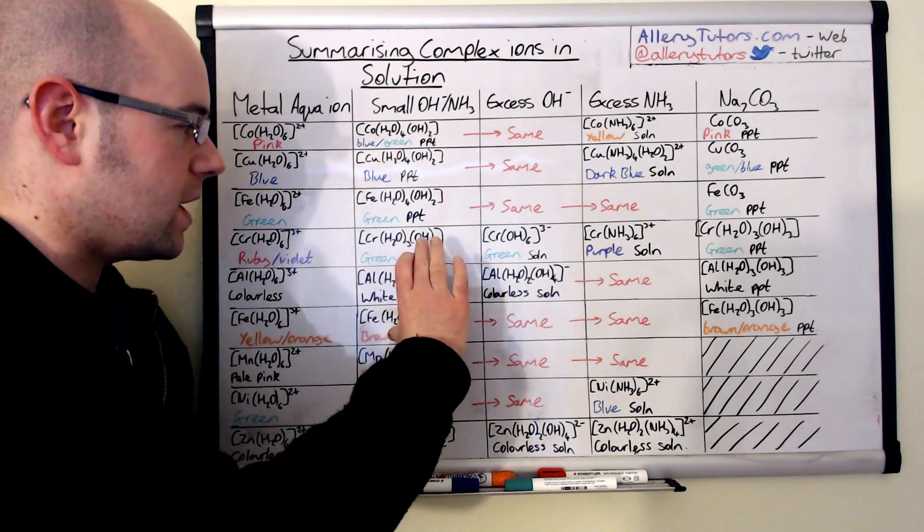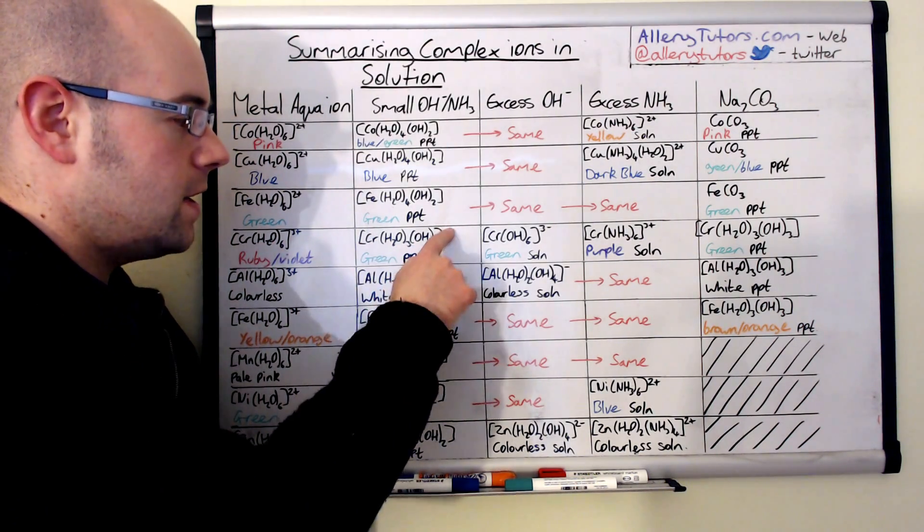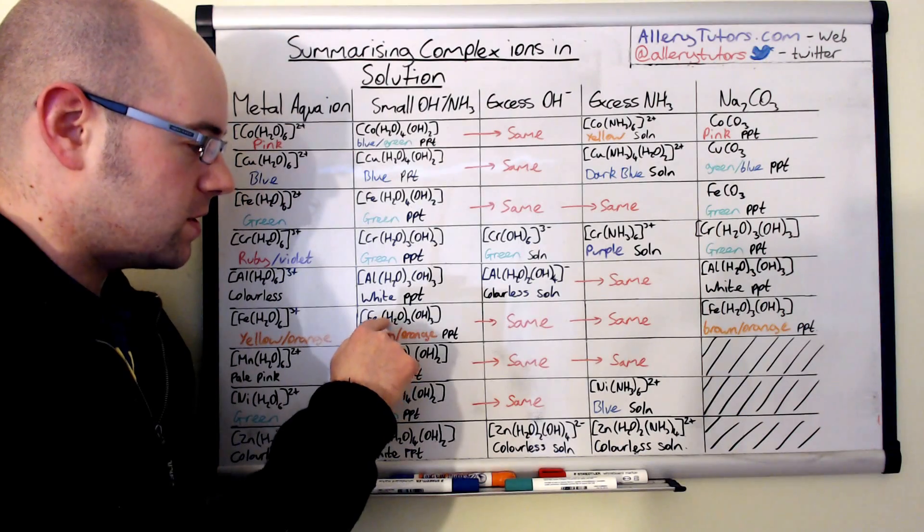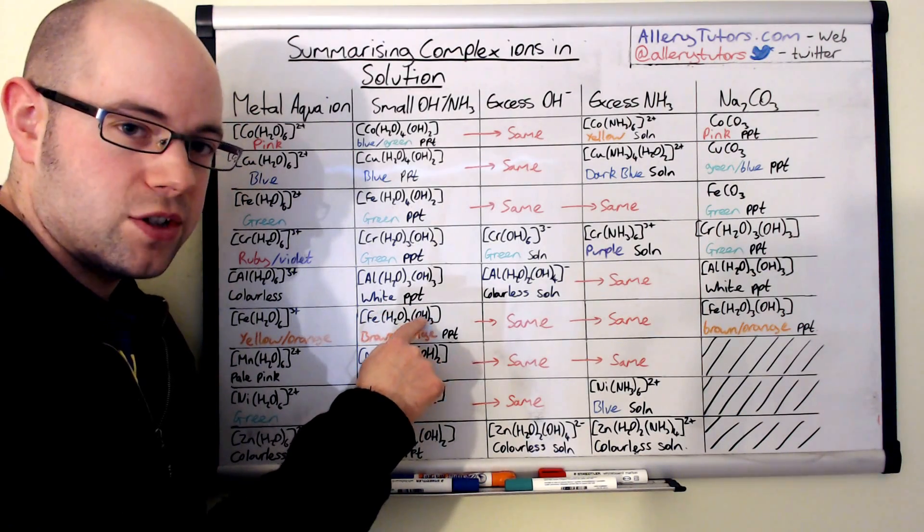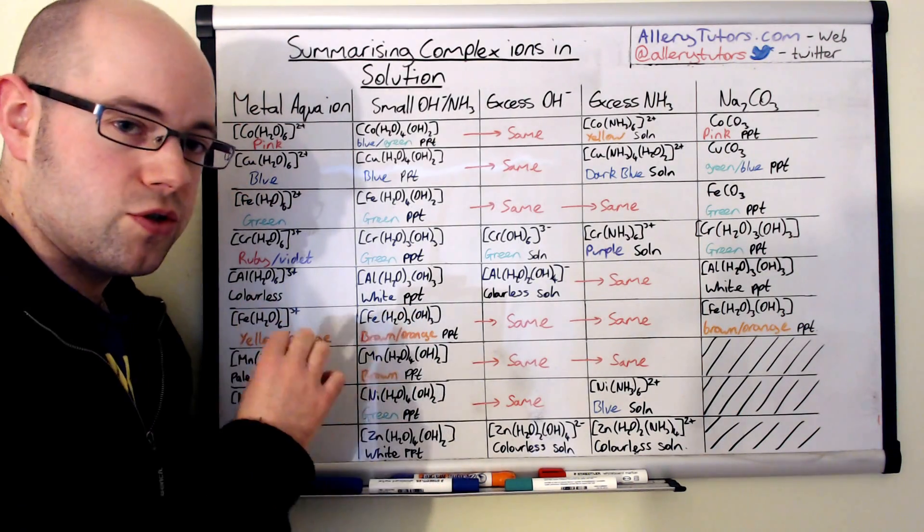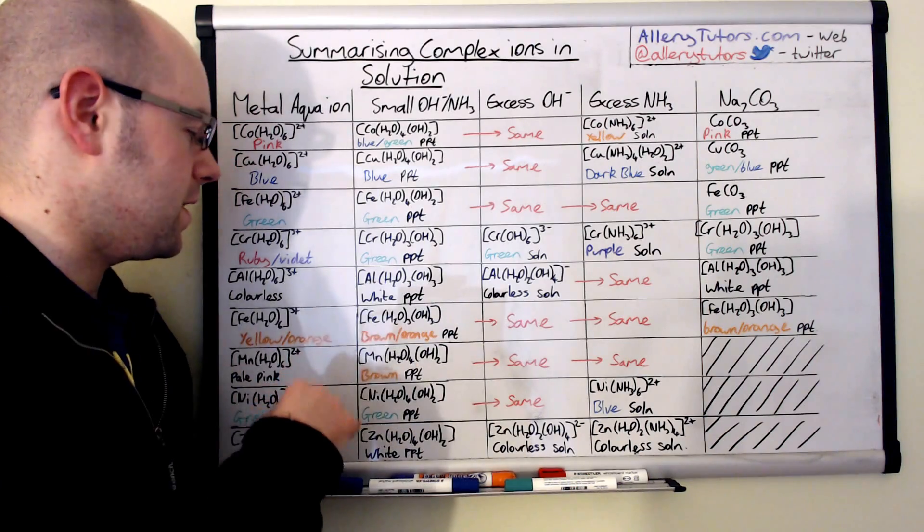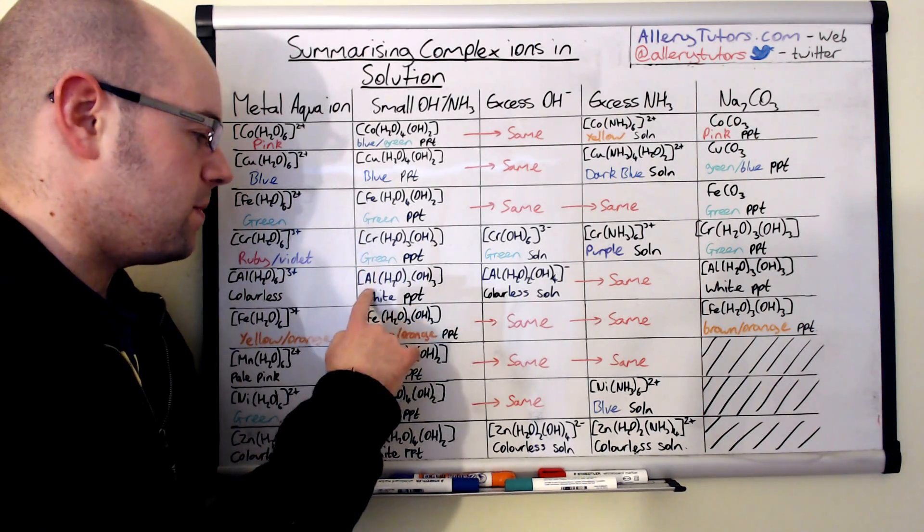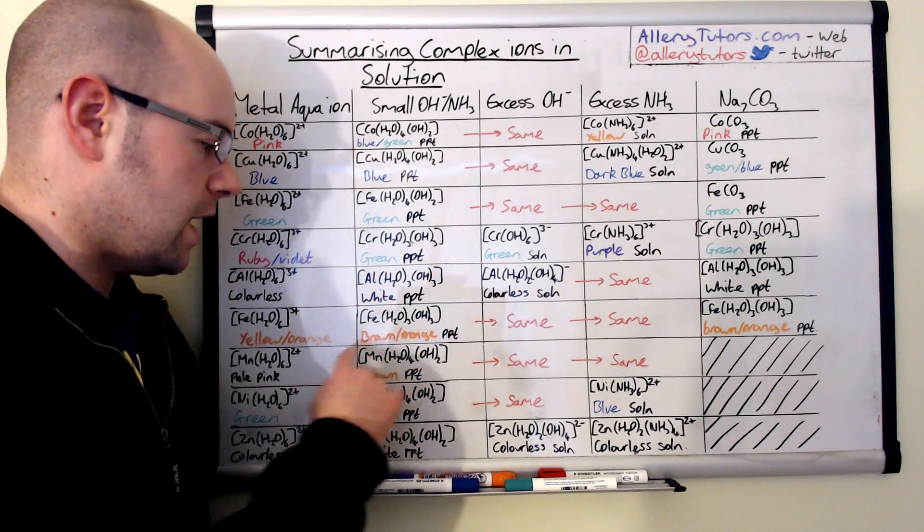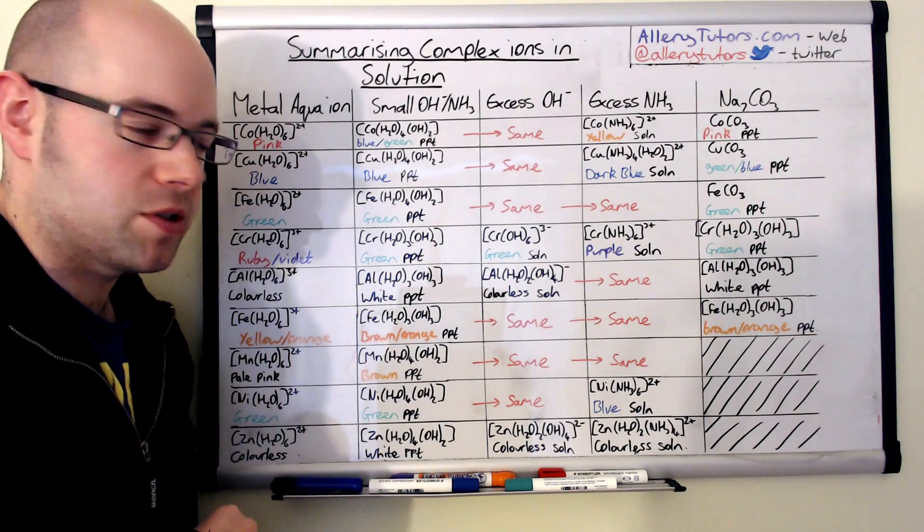And if we look at the 3+ ions as well, you can see again these are not charged as well except these are H2O3(OH)3, so these form a neutral complex. The chromium forms a green precipitate, aluminium is white and iron 3 is a browny orange a bit like rust colour.